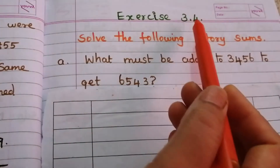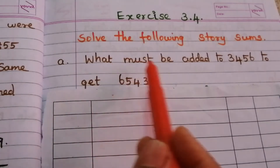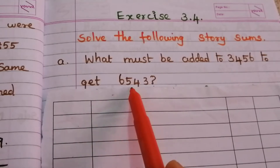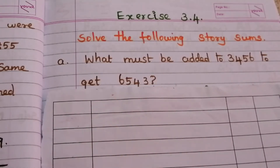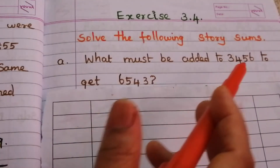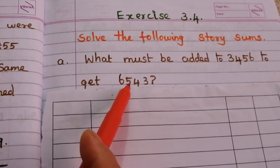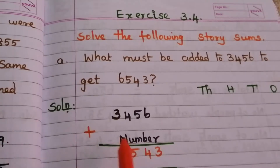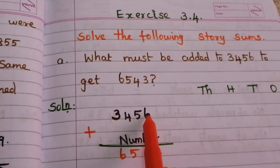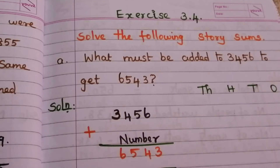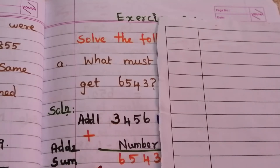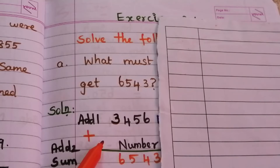Exercise 3.4. Solve the following story sums. A: What must be added to 3,456 to get 6,543? That means if we add one number to 3,456, we get 6,543. Here 3,456 is addend 1, the unknown is addend 2, and 6,543 is the sum. To find addend 2, we subtract addend 1 from the sum.